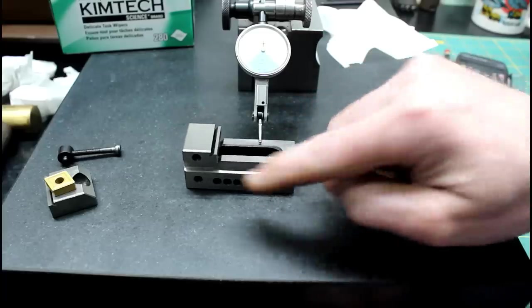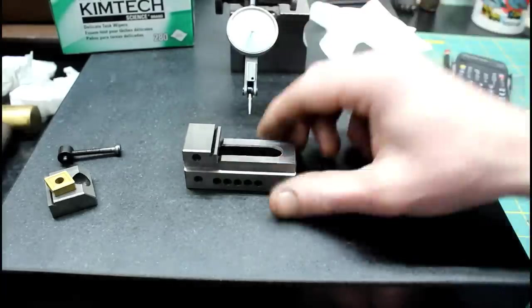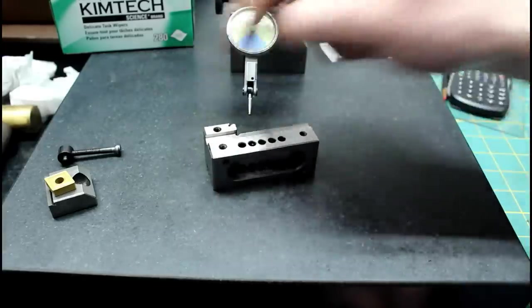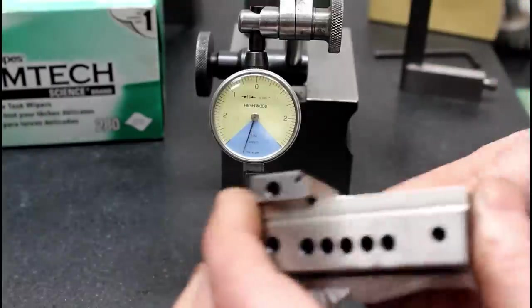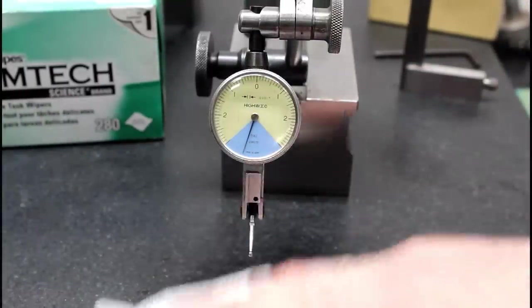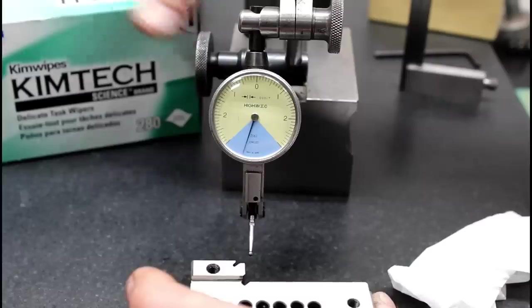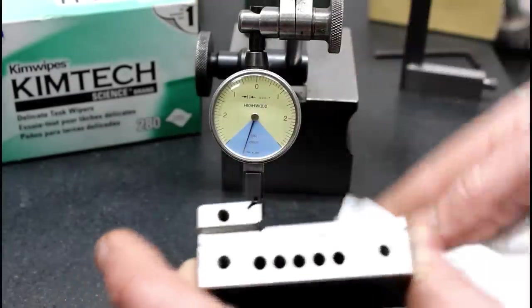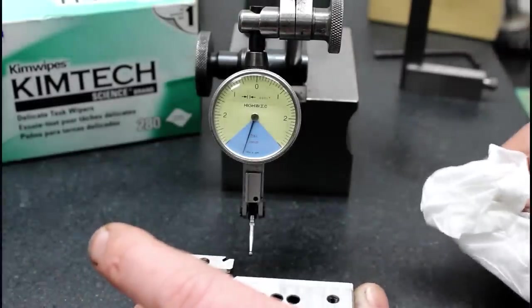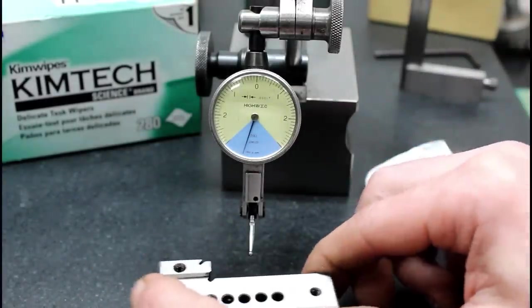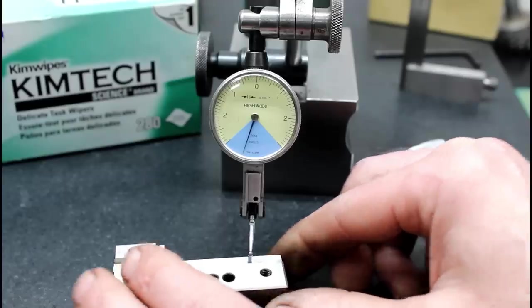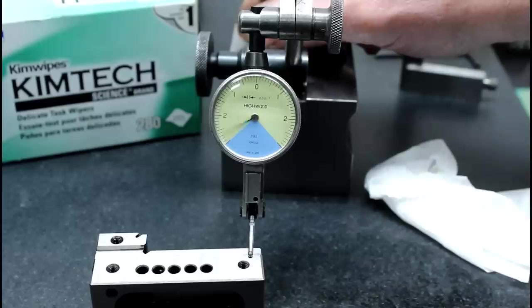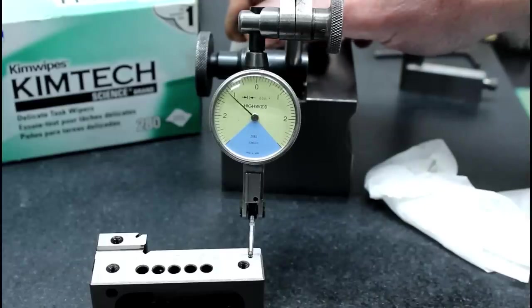Now let's check if the sides are parallel with each other and then we'll move on to the top and the bottom. These Kim wipes are really good. They don't leave any lint behind and make sure you get a good reading. If you use Kleenex or paper towels you'd get all kinds of lint and it wouldn't be good, not on the plate anyway.